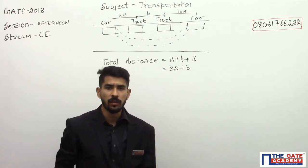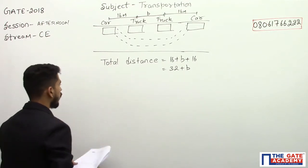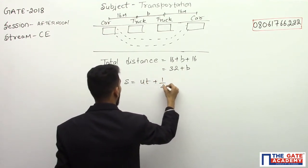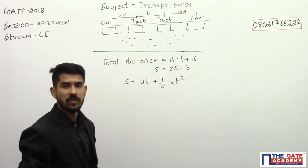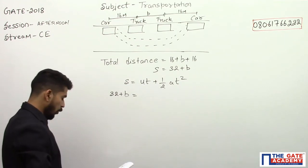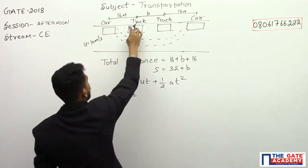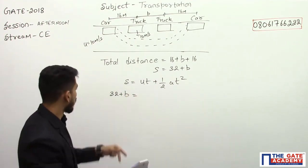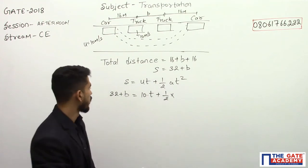We have to calculate the value of b to get the total distance traveled. The total distance s equals ut plus half a t squared. Here s equals 32 plus b. The initial speed u of the car is 10 meters per second, and the velocity of the truck is also 10 meters per second. So this becomes 10t plus half into 4 into t squared.